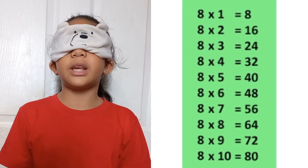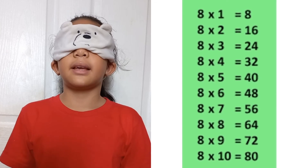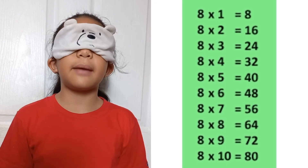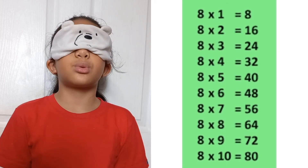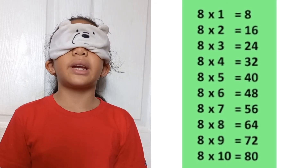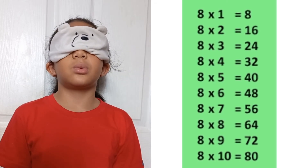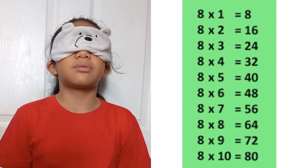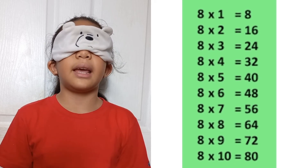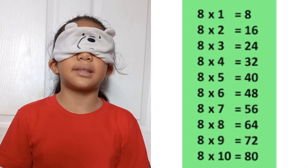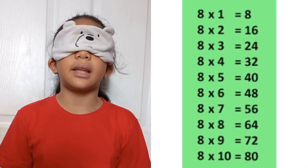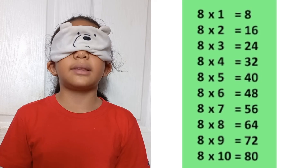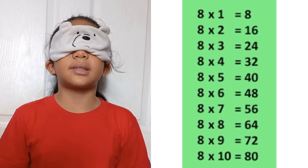8 times 1 equals 8. 8 times 2 equals 16. 8 times 3 equals 24. 8 times 4 equals 32. 8 times 5 equals 40. 8 times 6 equals 48. 8 times 7 equals 56. 8 times 8 equals 64. 8 times 9 equals 72. 8 times 10 equals 80.